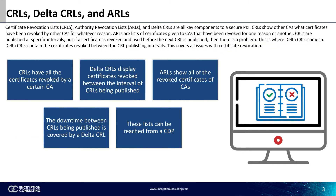Certificate revocation lists, or CRLs, are lists containing revoked certificates and their data that are published at certain time intervals. But say a certificate is revoked in the time between the old and new CRL being published — how do CAs know that certificate is revoked? Delta CRLs are CRLs published in the downtime between old and new CRLs being published, ensuring no certificates escape being on a CRL.